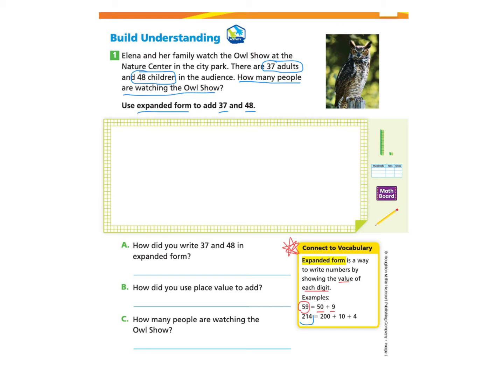The other example is 214, where they have expanded the number 214 to show the 200s as 200, the 1 group of 10 as 10, and the 4 ones as 4. So they have expanded 214 to read 200 plus 10 plus 4.